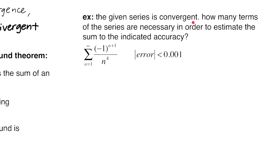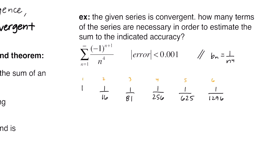This example says the given series is convergent. How many terms of the series are necessary in order to estimate the sum to the indicated accuracy? We have sigma of negative 1 to the n plus 1 over n to the fourth, with an error less than 0.001. We plug in n equals 1, then 2, then 3, and so on, calculating the decimals. You can see that 0.001 lies between 0.0016 and 0.0007. Since the error must be less than 0.001, we only need 5 terms of the series.